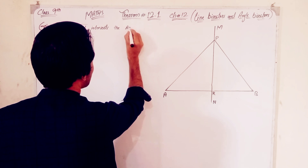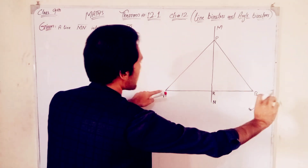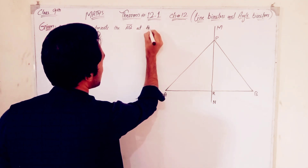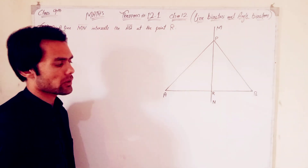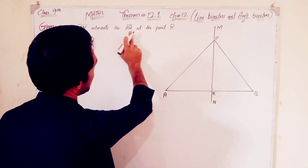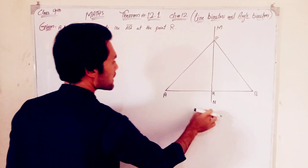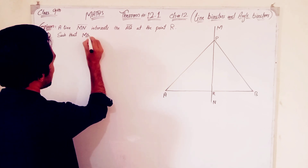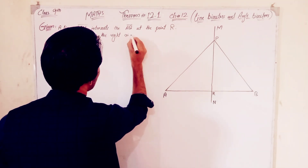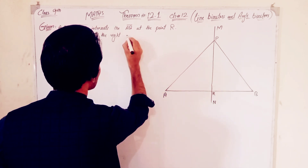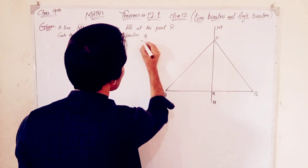Line AB — line MN intersects line AB at the point R, such that MN is the right bisector of AB.